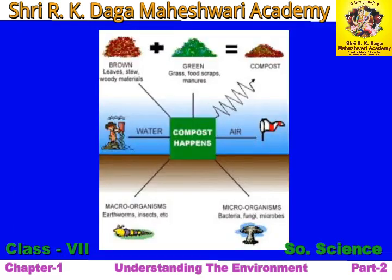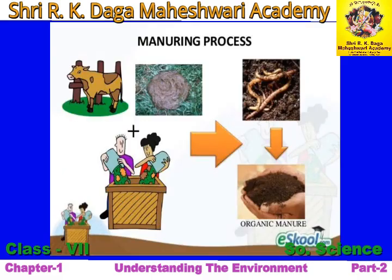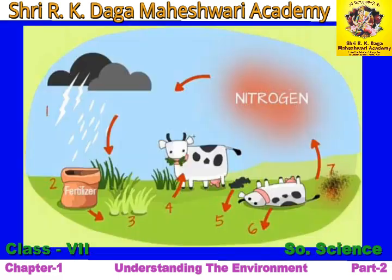Animals provide support for the growth of plants. Animals help plants to reproduce by helping in the pollination of seeds. Animals also provide nutrition for the soil. Nitrogen is essential for the survival and growth of plants.